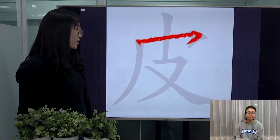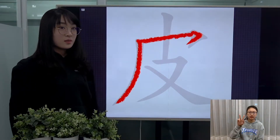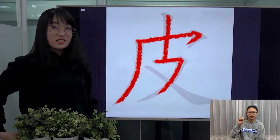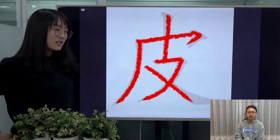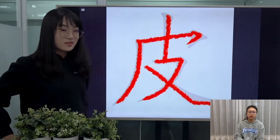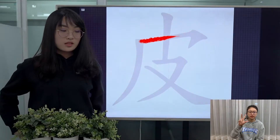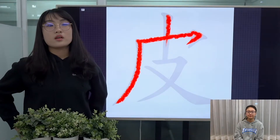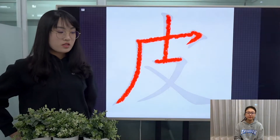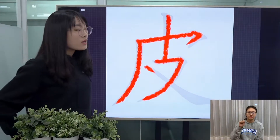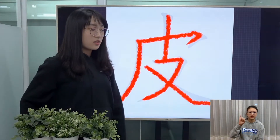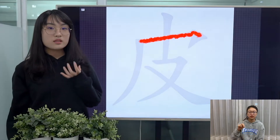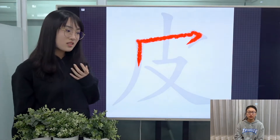This character is pronounced as 皮, and as a noun, it basically means the skin of something, the peel of something — normally if you're talking about fruits, vegetables — and also the shell of a grain or a nut, et cetera.